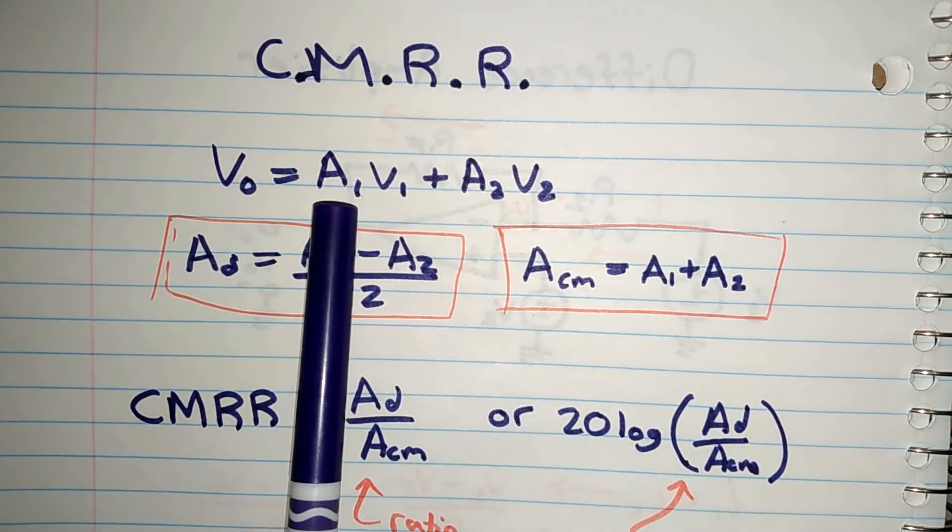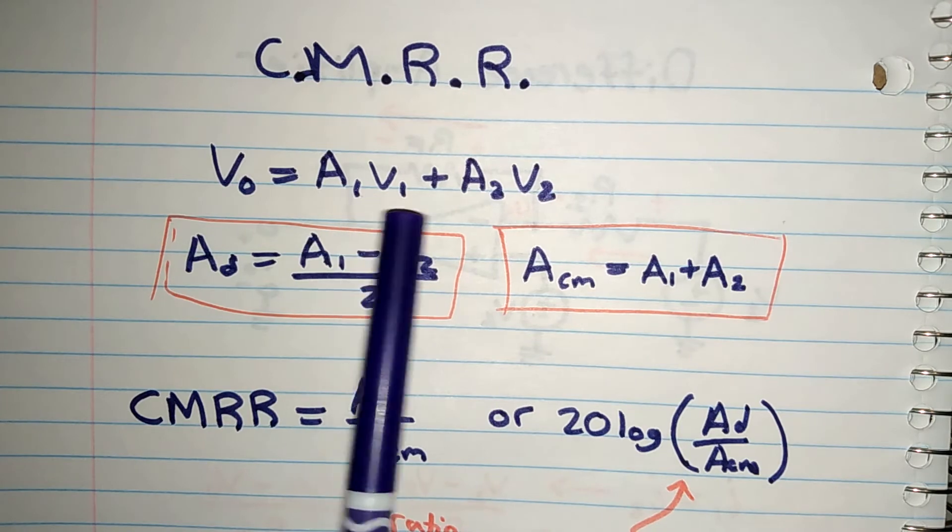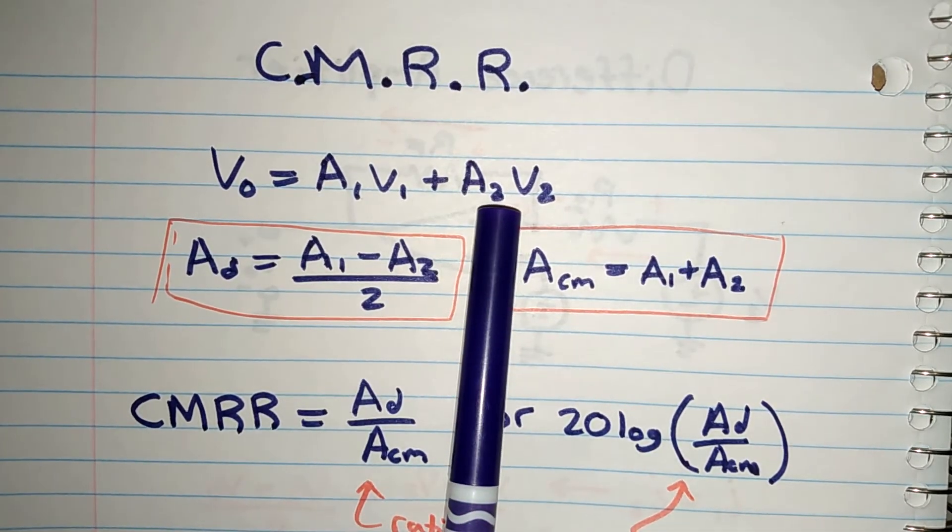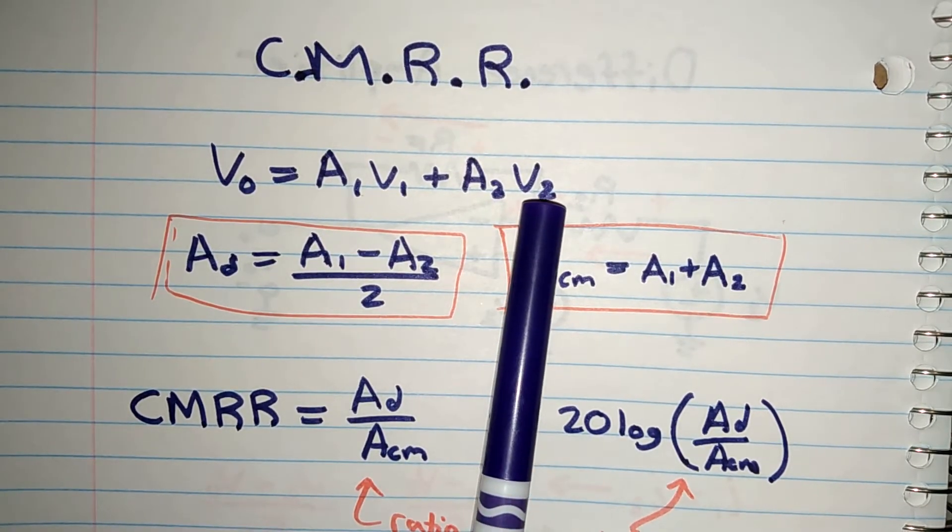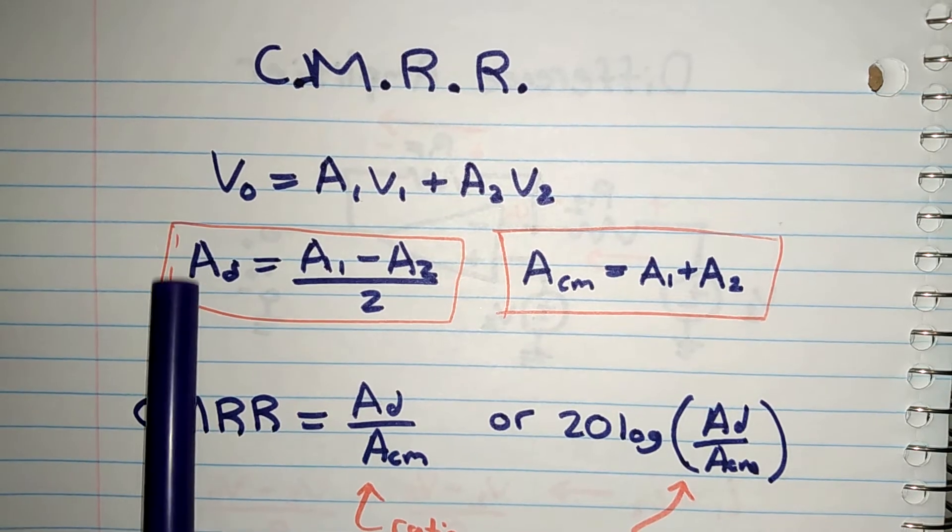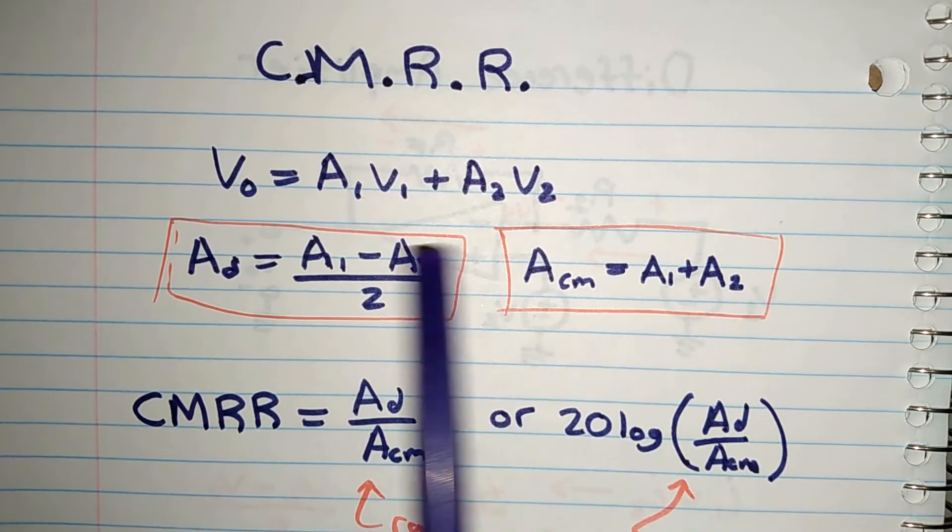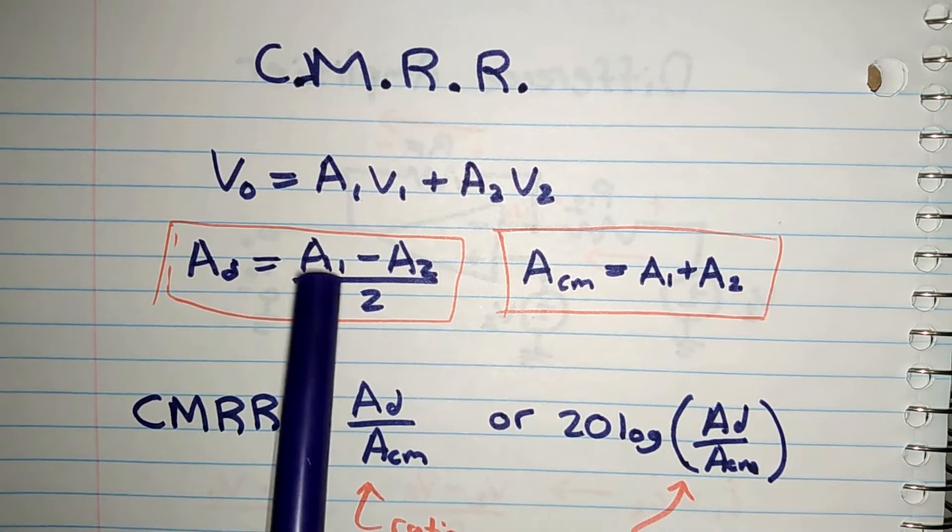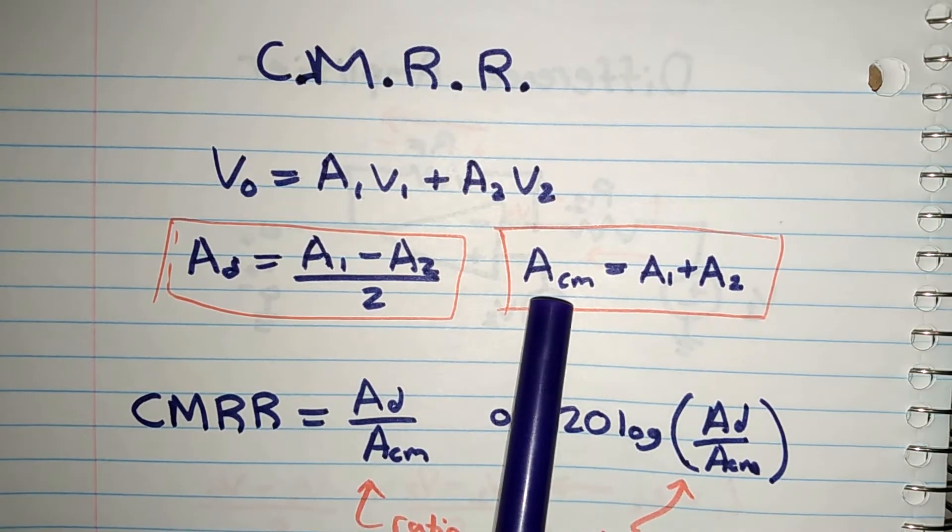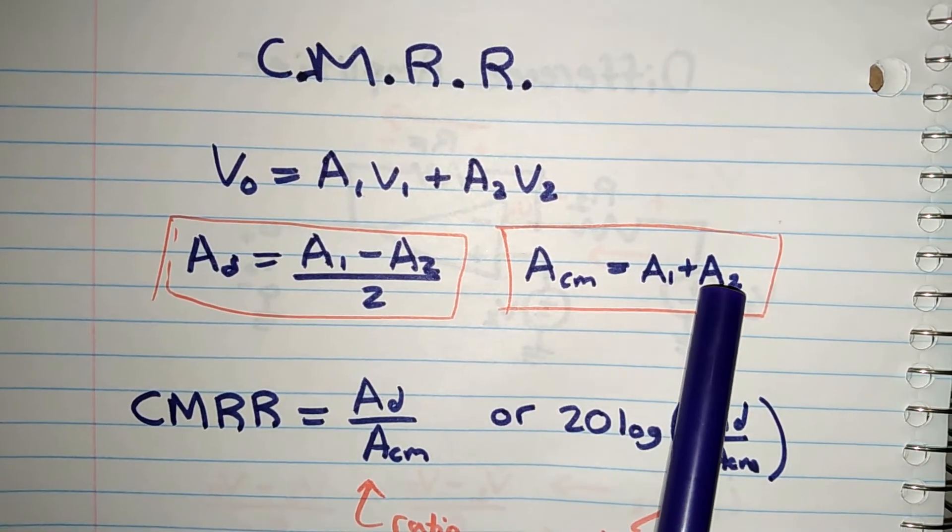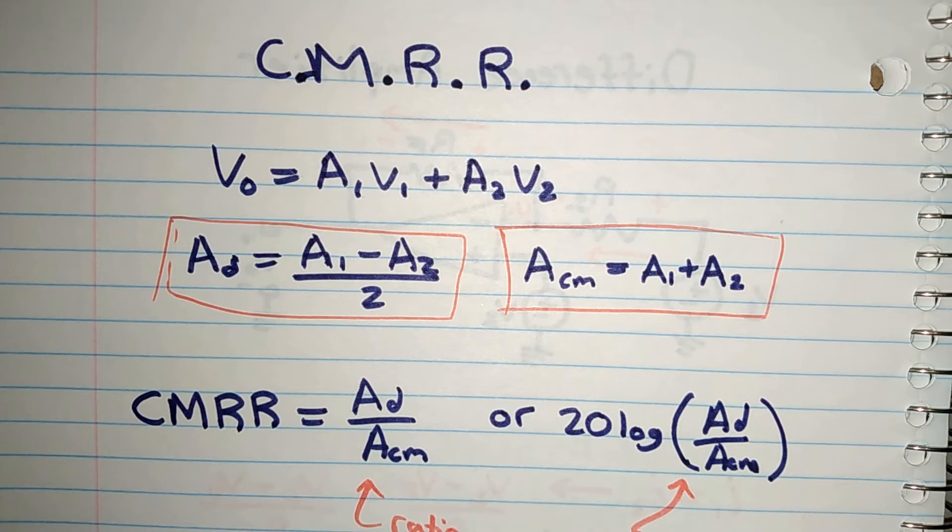So we said the output voltage would be the gain of the input voltage, the gain of the first input voltage plus the second gain of the second input voltage. And then we also derived these two equations. The differential gain is A1 minus A2 over 2, and the common mode gain is A1 plus A2. It was explained in the previous video.